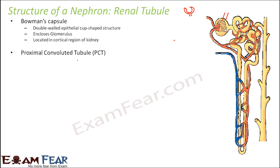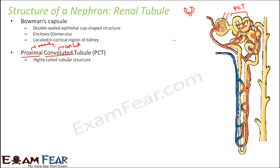Next is the PCT — proximal convoluted tubule. Convoluted means coiled, and proximal means nearby. So this is a coiled tubule which is located nearby to the glomerulus. It is a highly coiled tubular structure, and you can see in the picture how coiled it is. It is located in the cortical region of the kidney, so this portion is also present in the cortex.